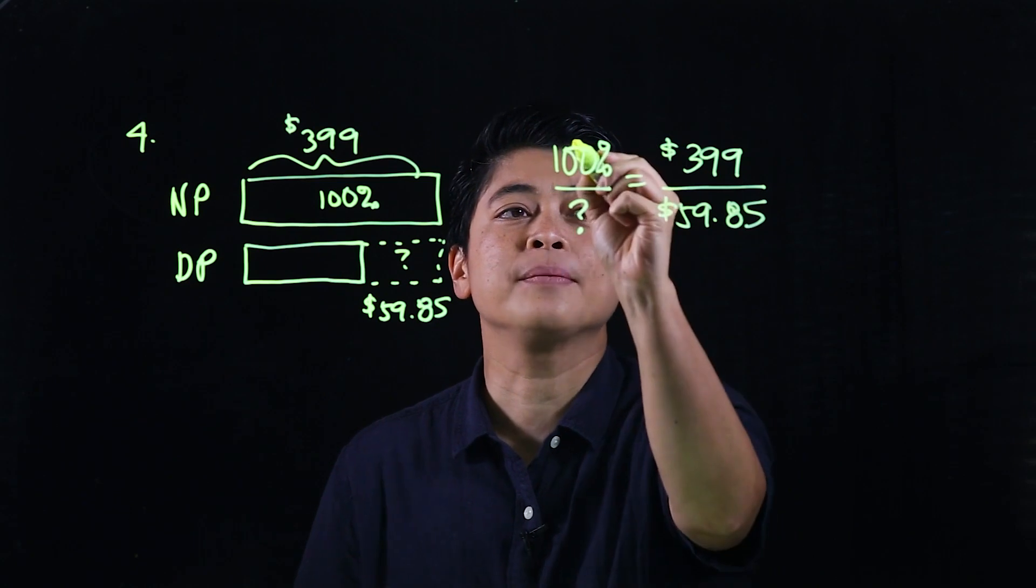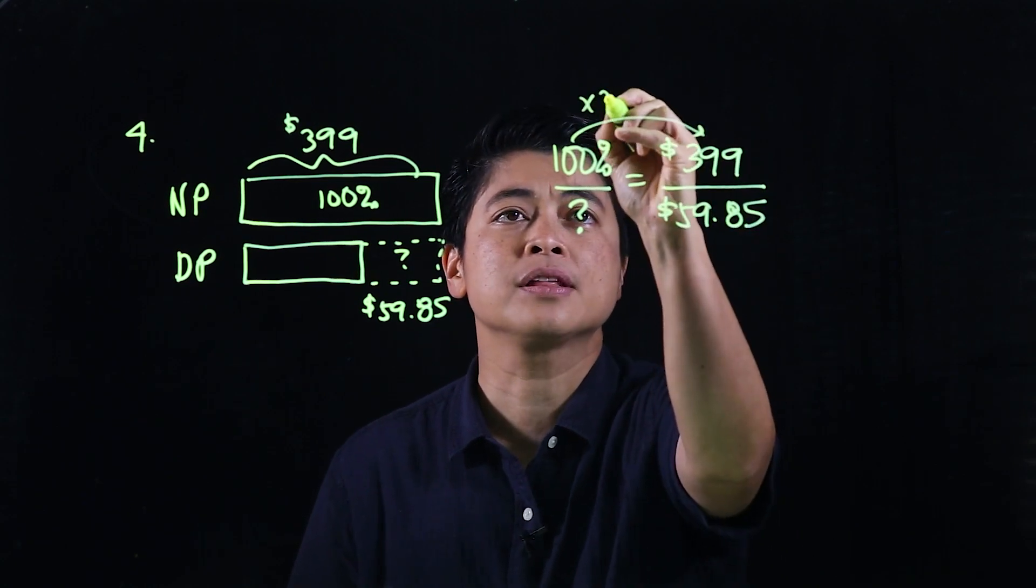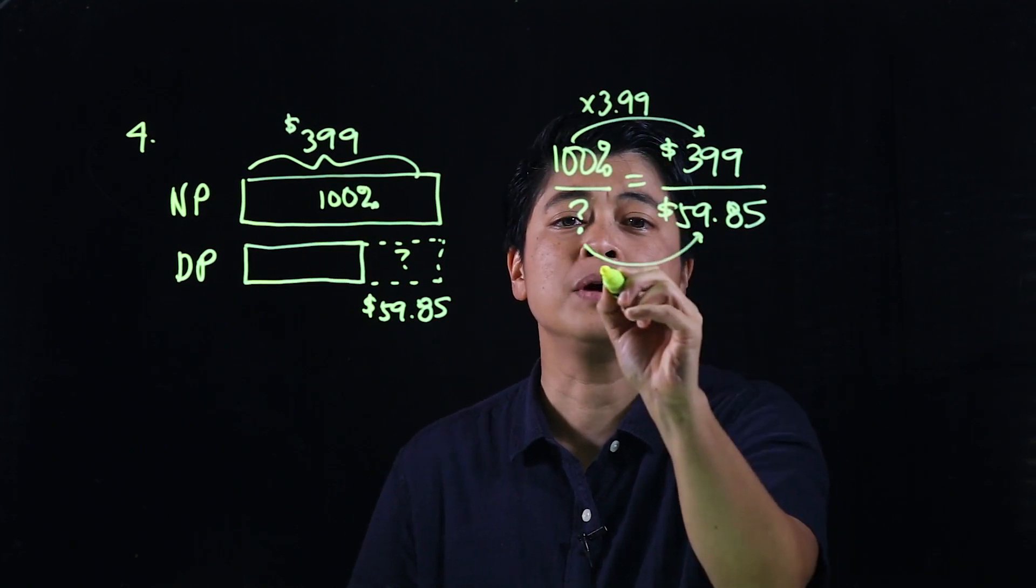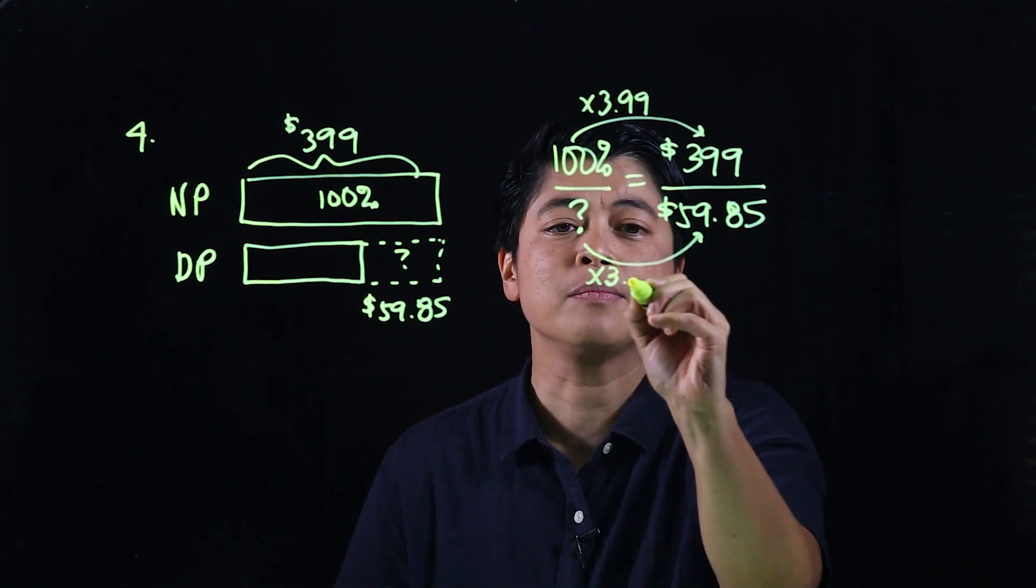Okay, so clearly from here to here, that's times $399. Which means to get from here to here, I need to multiply by the same, $399. But I'm not going forward, I'm going backwards.